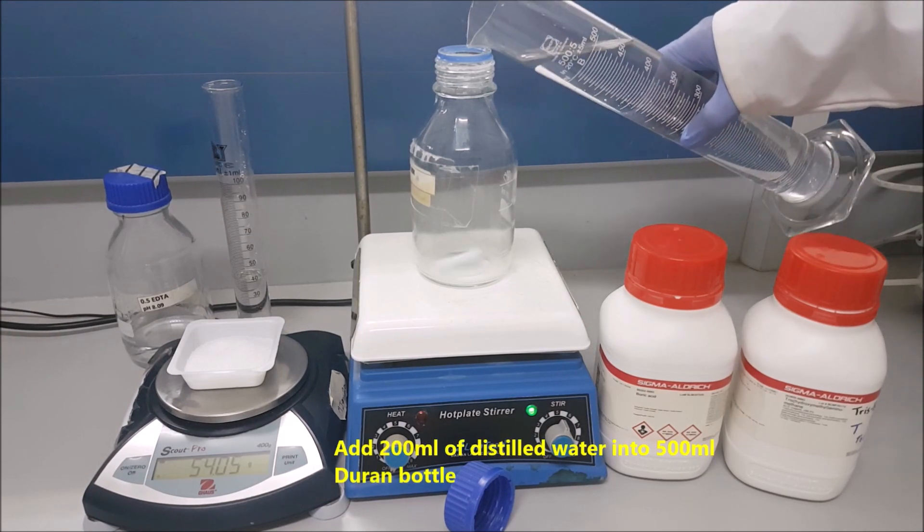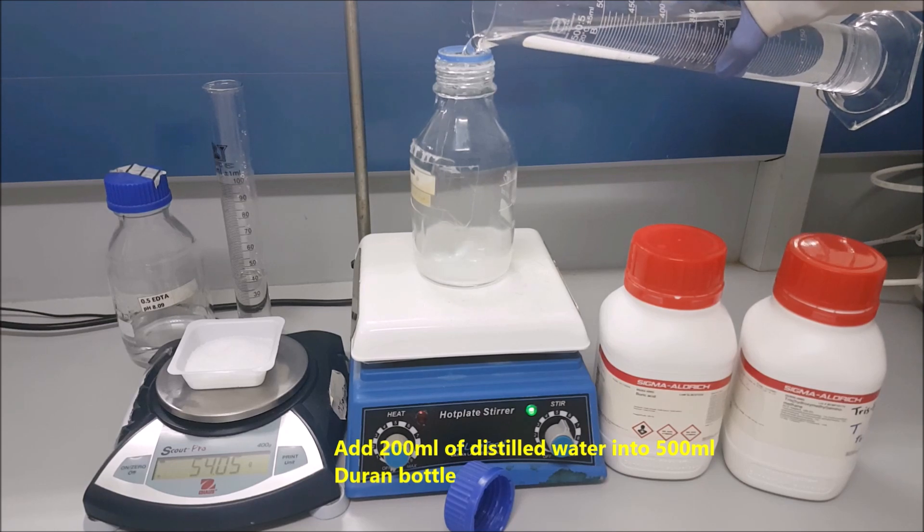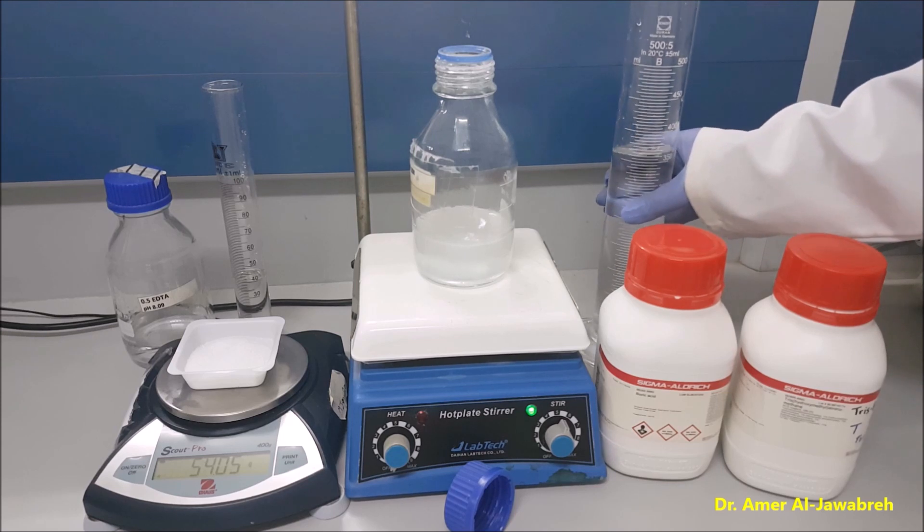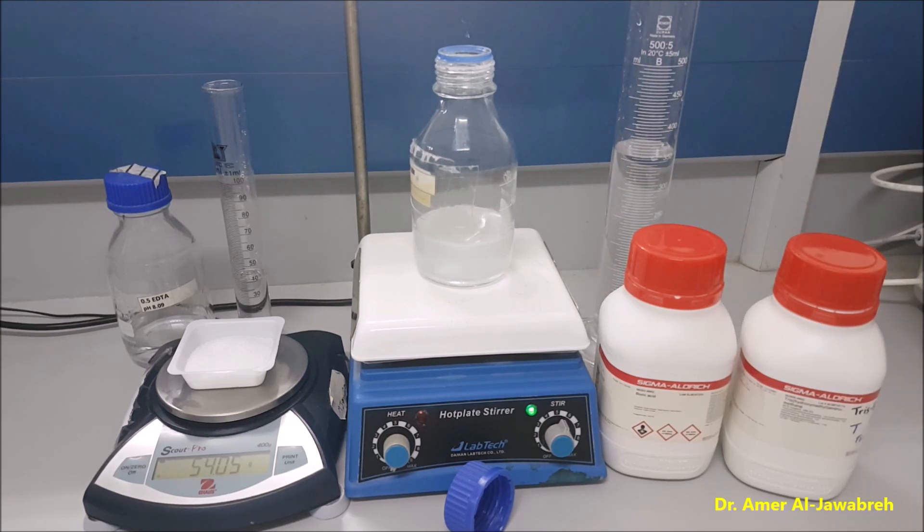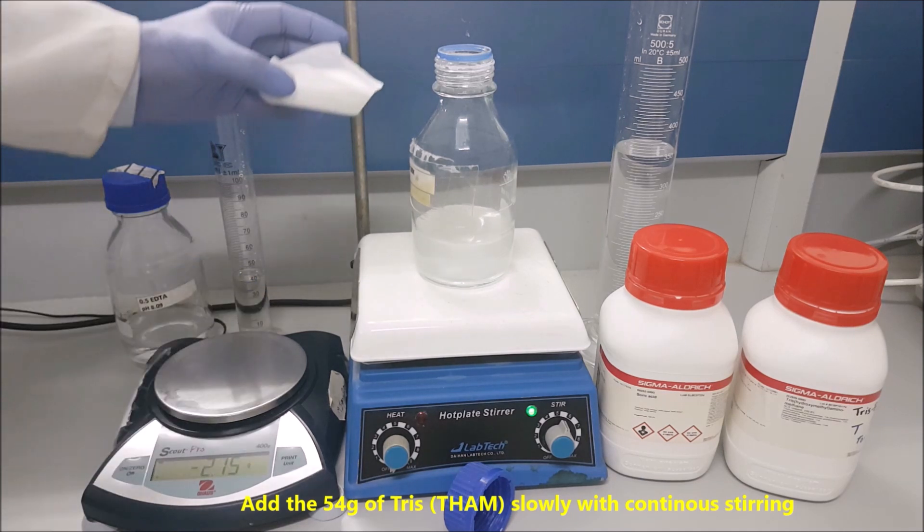Add 200 ml of distilled water into 500 ml Duran bottle. Add 54 grams of Tris slowly with continuous stirring.